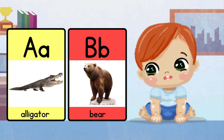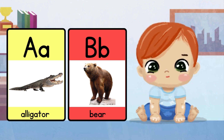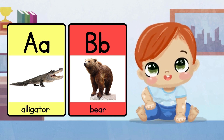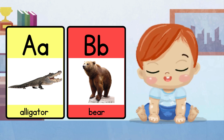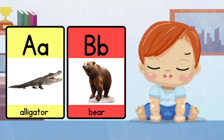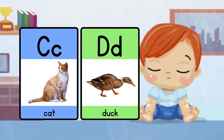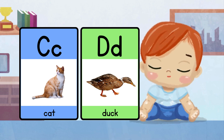Let us learn from ABC today. A for alligator. B for bear. C for cat. D for duck.